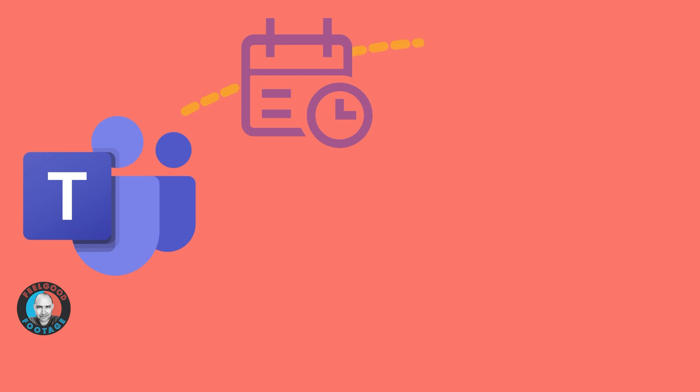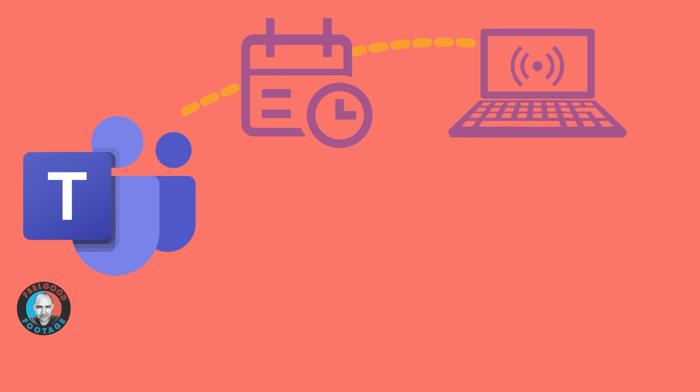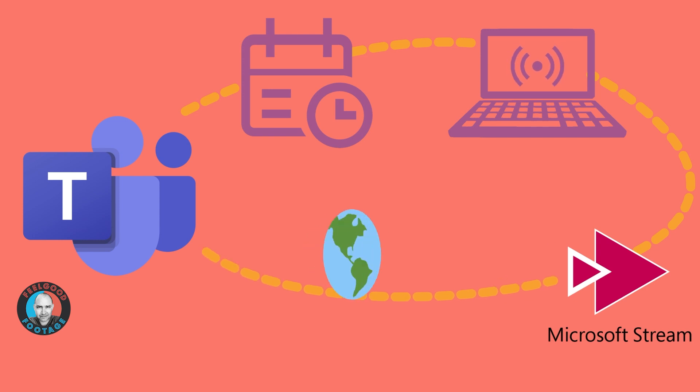We'll use Microsoft Teams to schedule and organize the live event, generate the invites and the all-important server ingest URL your encoder will stream to. Behind the scenes the live stream is being hosted by Microsoft Stream, the corporate video sharing service, but everything you need to do as a producer or attendee can be done from within Teams. I think this could be a great solution for certain kinds of corporate live streaming jobs, and it's an option that's overlooked by many people simply because they don't know it really exists.